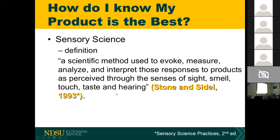How do I know my product is the best? We rely on sensory science. Sensory science is a scientific method used to evoke, measure, analyze, and interpret those responses to products as perceived through the senses of sight, smell, touch, taste, and hearing. The whole goal is to get a response from people tasting a particular product.